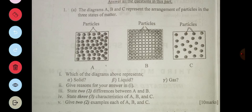The diagrams A, B, and C represent the arrangement of particles in the three states of matter. Which of the diagrams represents solid, liquid, and gas? A represents liquid, B represents solid, and C represents gas.